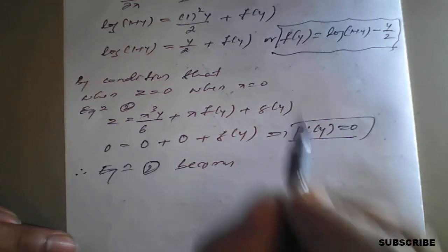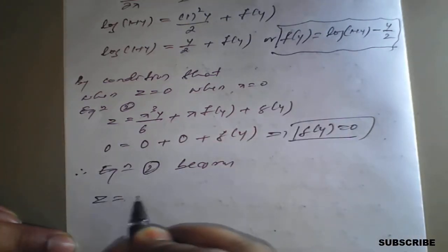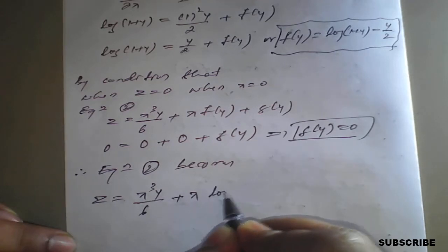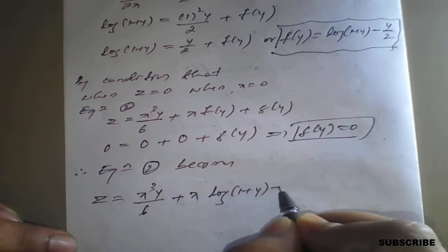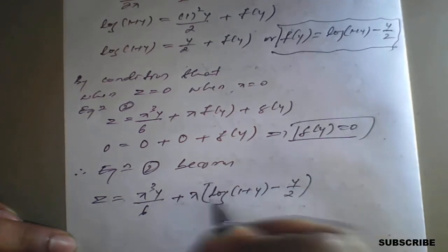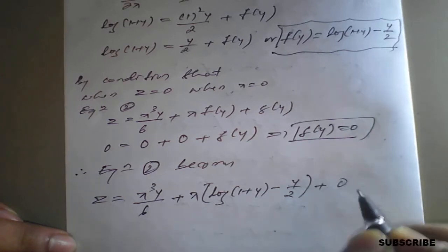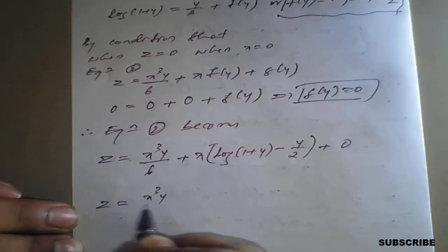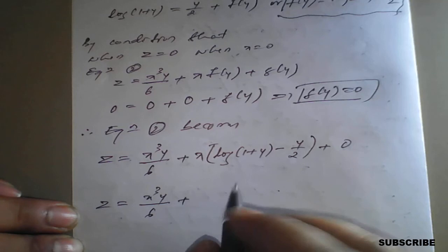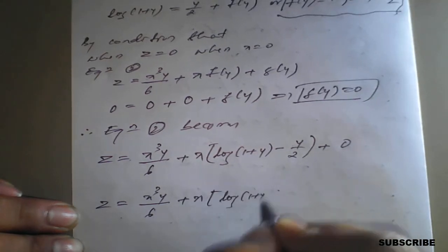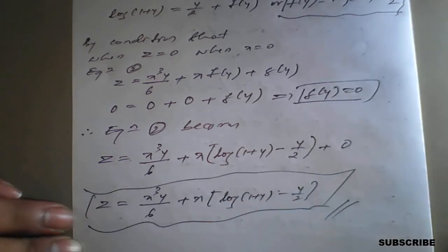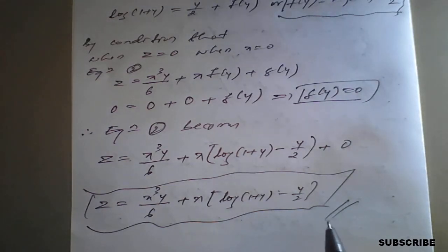Substituting the values of f(y) and g(y) into Equation 2: z = x³y/6 + x·[log(1+y) − y/2] + 0. Therefore the final answer is z = x³y/6 + x·log(1+y) − xy/2, which is the required solution free from arbitrary integrating functions.